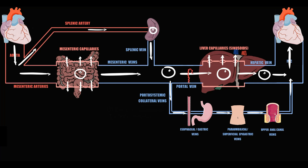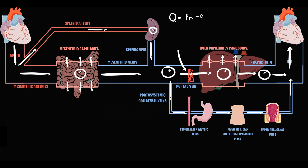Suppose that thrombosis of the portal vein occurs. The flow through the portal vein into the liver sinusoids begins to decrease, because flow equals the pressure inside the portal vein minus pressure inside the liver sinusoids, divided by resistance between them. Resistance is inversely proportional to the fourth power of the radius. So if thrombosis occurs, the radius inside the portal vein decreases, resistance increases, and flow through this area decreases.